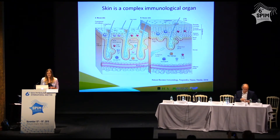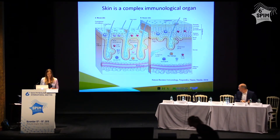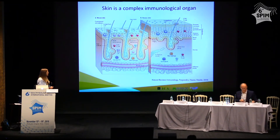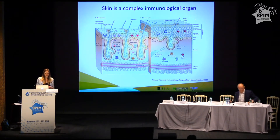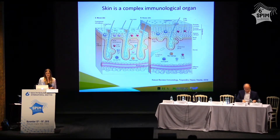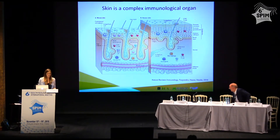The skin is the outermost barrier of the body to the environment, so it encounters constant toxins, pathogens, and trauma. But it's much more than just a passive physical barrier — it is a very complex immunological organ. As such, it harbors a variety of immune cells. These immune cells interact not only with each other, but also with skin cells — keratinocytes and fibroblasts. This interaction is crucial to maintain tissue homeostasis, support tissue regeneration, while ensuring adequate response to harmful threats such as pathogens.